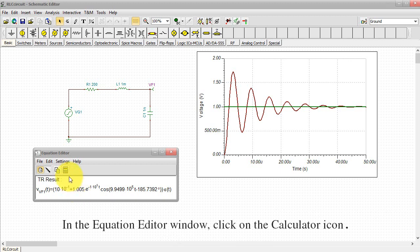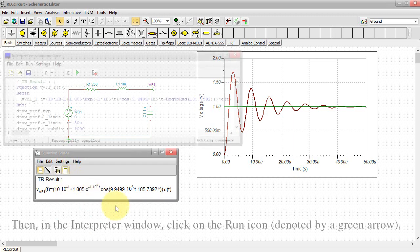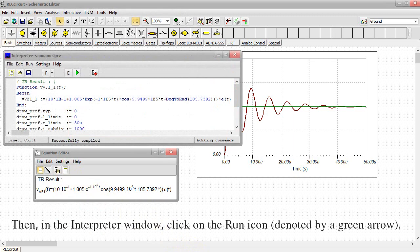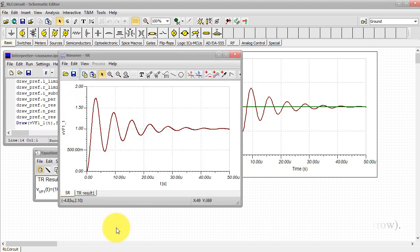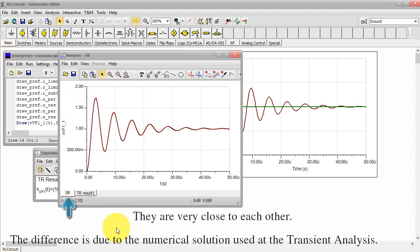In the Equation Editor window, click on the Calculator icon. Then, in the Interpreter window, click on the Run icon, denoted by a green arrow. They are very close to each other.